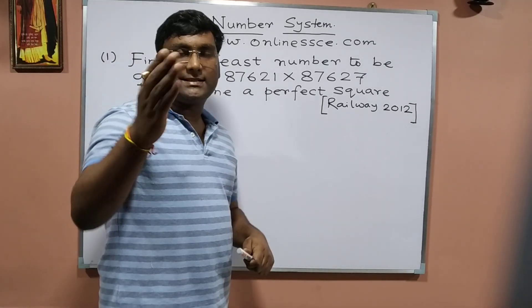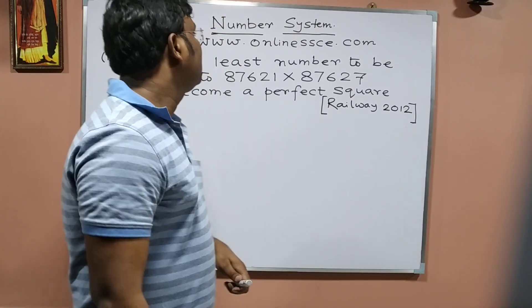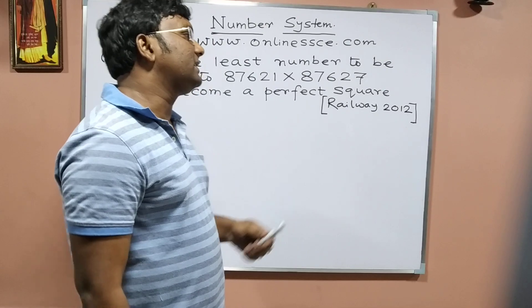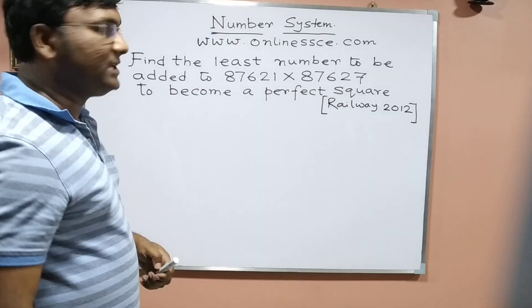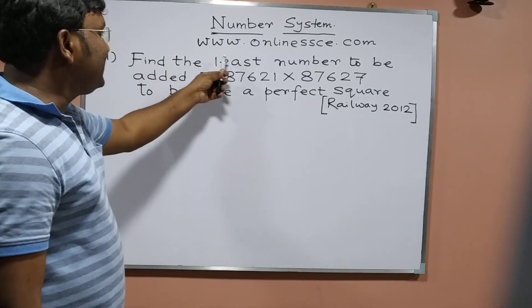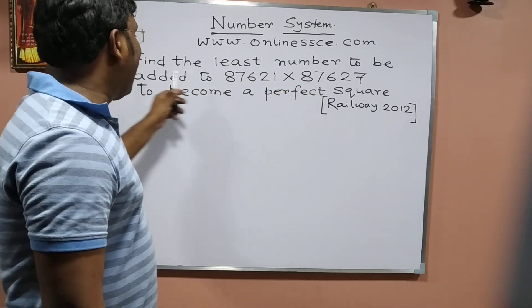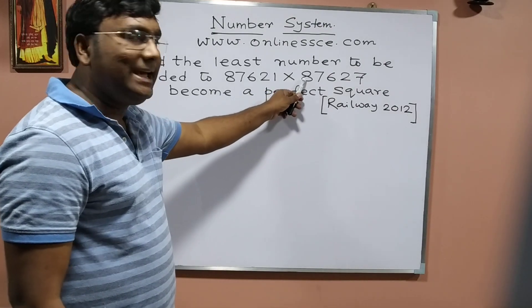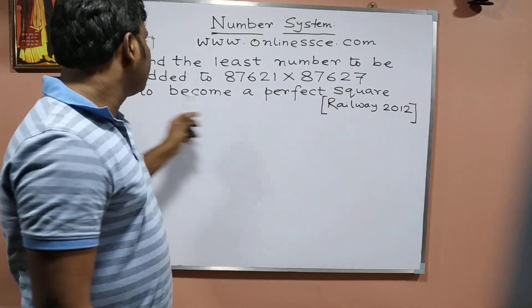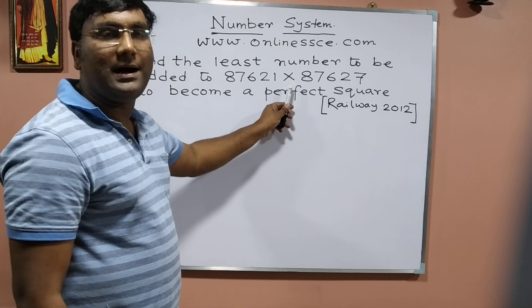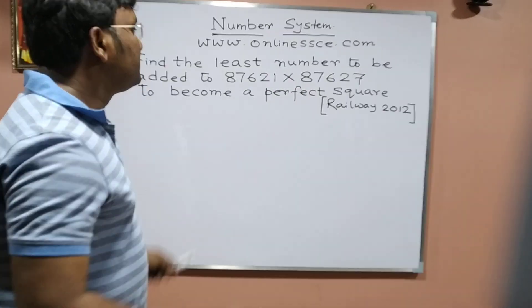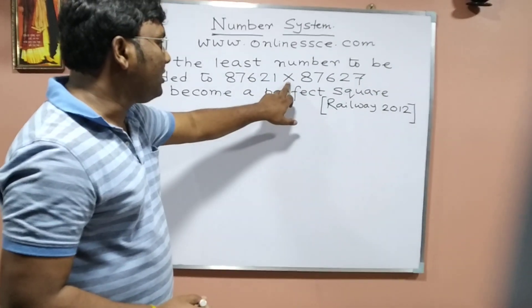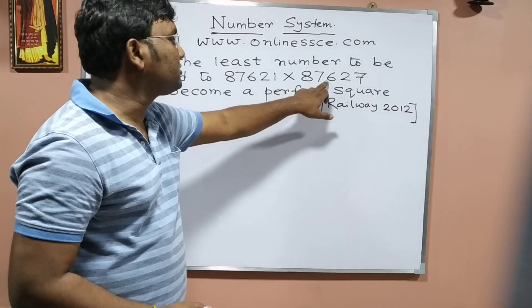Hello, welcome to SSC. Let's see the number system in the 4th part. Find the least number to be added to 87621 to 87627 to become a perfect square.